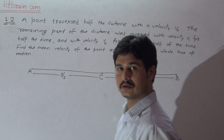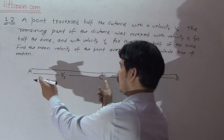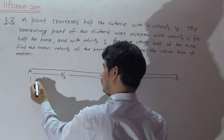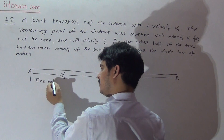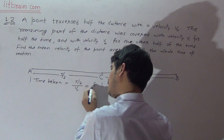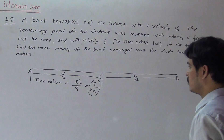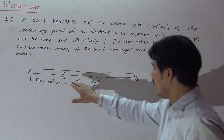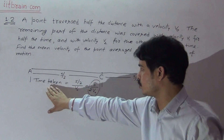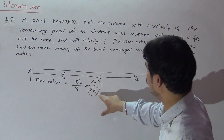The first part, AC, is covered with velocity V0. If you travel this part with velocity V0, then the time taken in this part is distance over velocity, which is (S/2) / V0, equal to S/(2V0). This is the time for the first part of the journey from A to C.